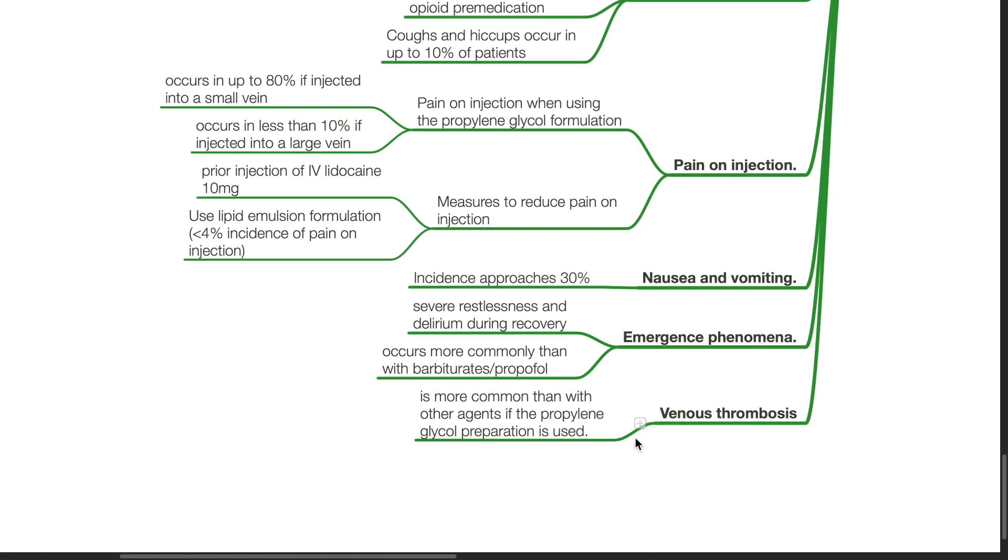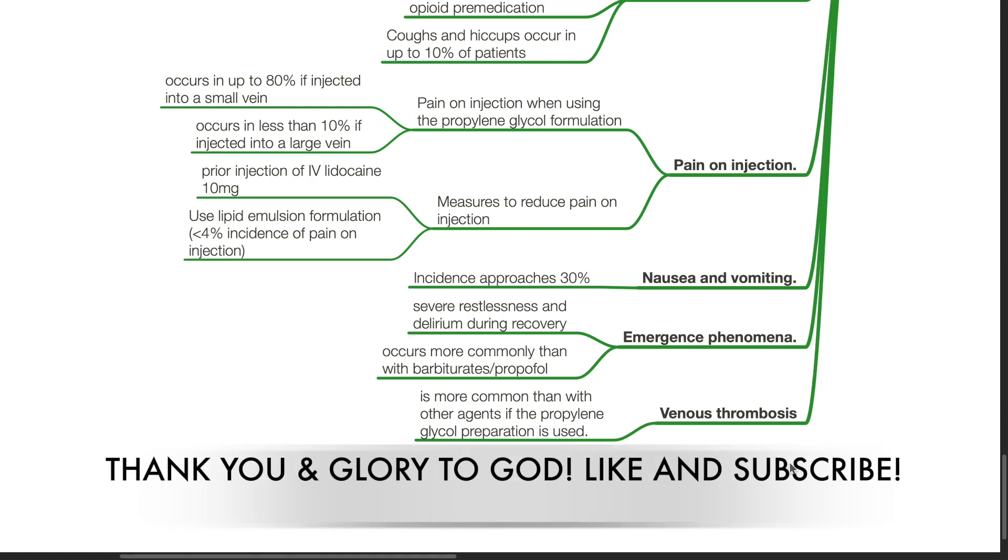The incidence of nausea and vomiting approaches 30% for etomidate. Emergence phenomena such as severe restlessness and delirium can occur in recovery, and it occurs more commonly than with barbiturates or propofol. Venous thrombosis is more common than with other agents if the propylene glycol preparation is used.